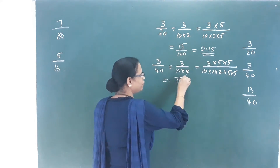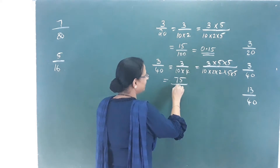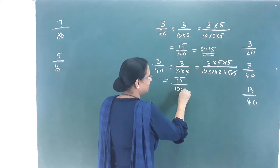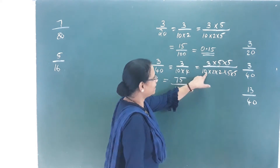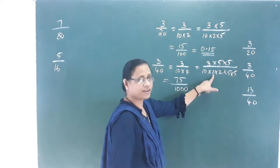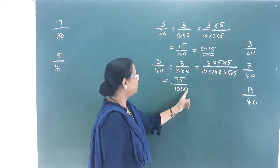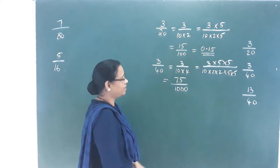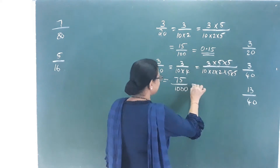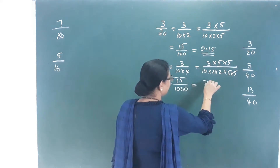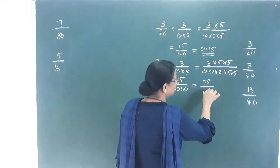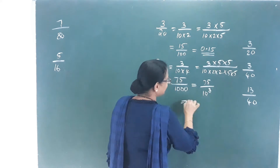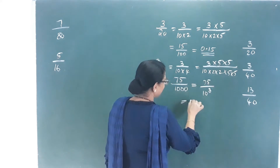75 by — here 10, either 10, so 1000 — that means 75 by 10 cubed. Then 3 decimal places.